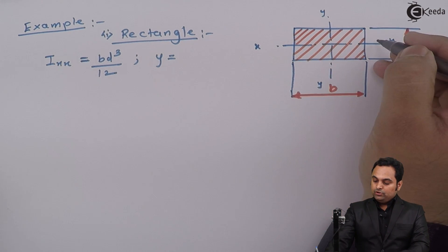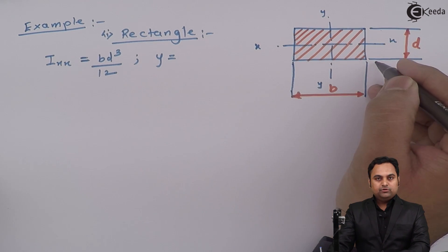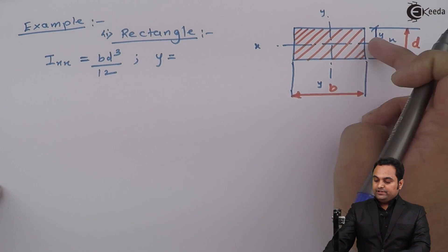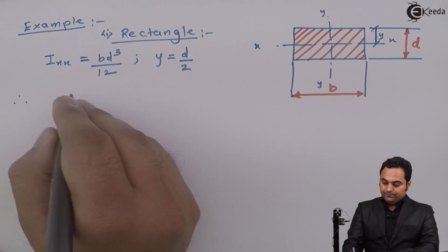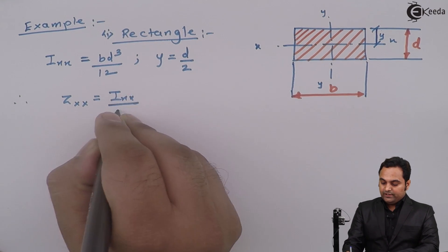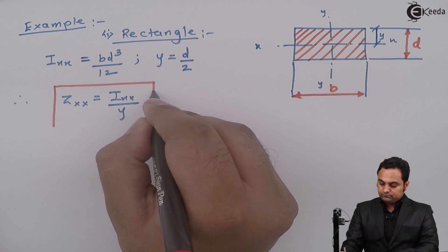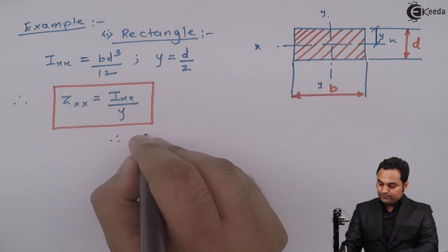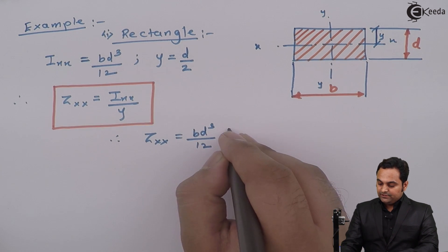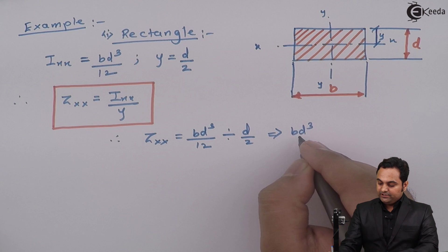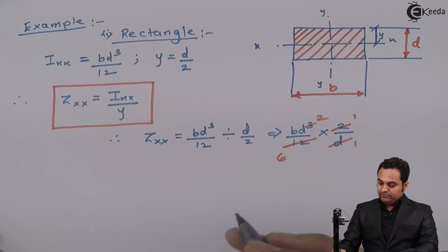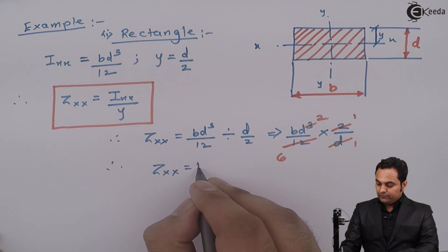Since we are considering moment of inertia about the x-axis, the distance Y is from the x-axis to the topmost or bottom most fiber, which is D/2. Therefore, the section modulus about the x-axis is ZX = IXX / Y = (BD³/12) / (D/2) = BD³/12 × 2/D. After cancellation, ZX = BD² / 6.